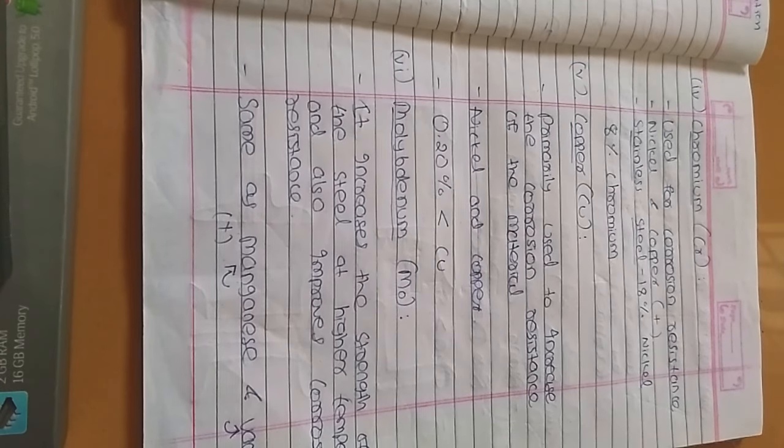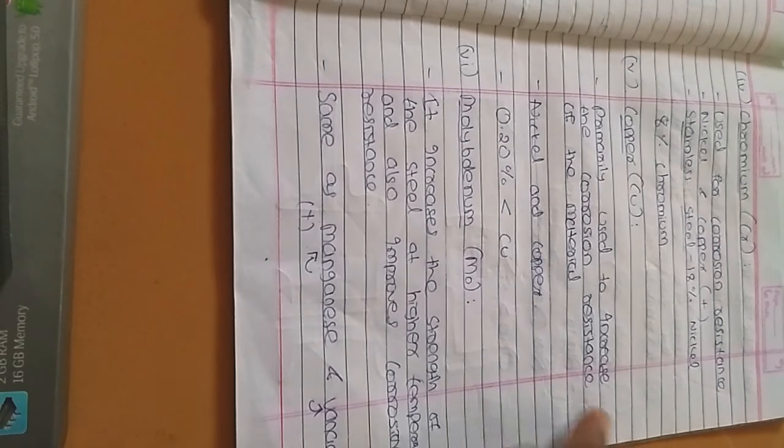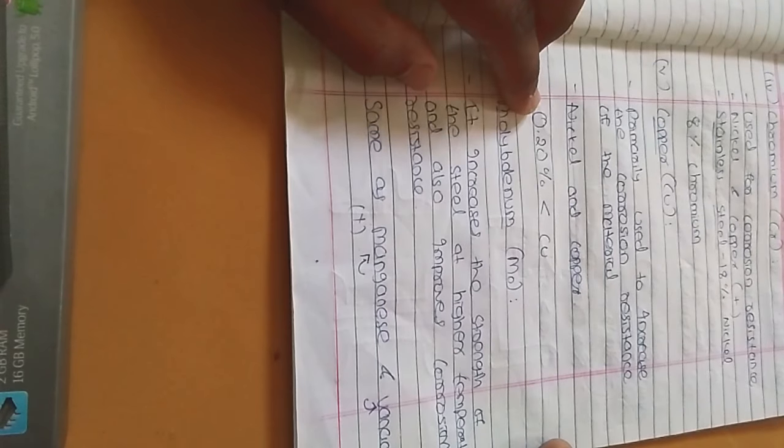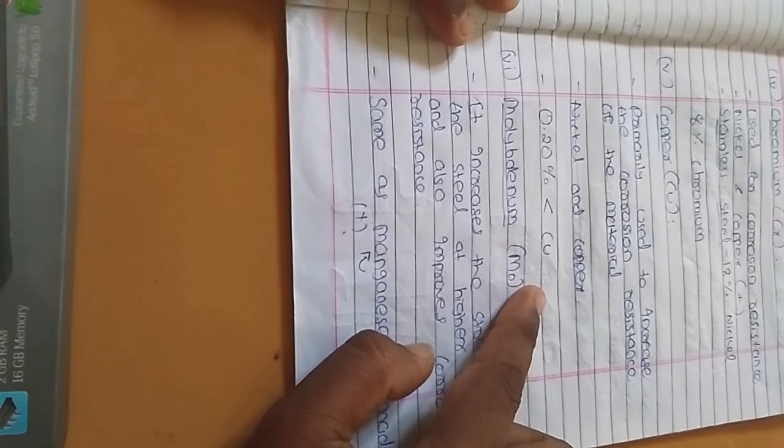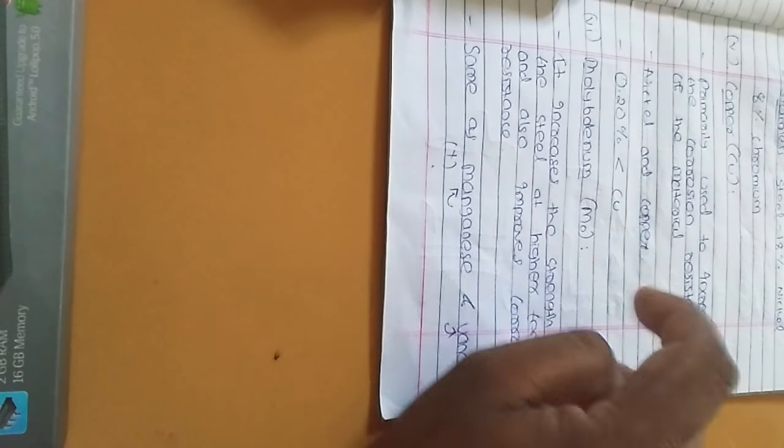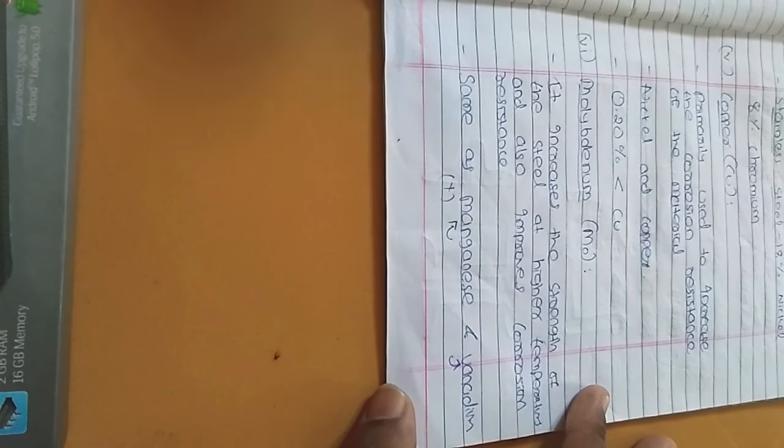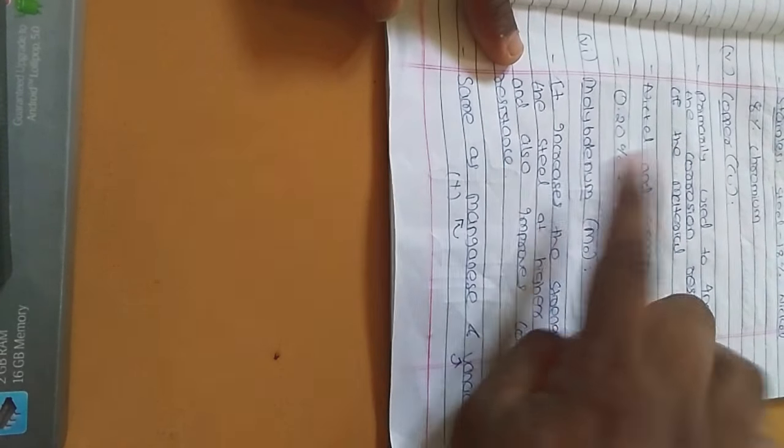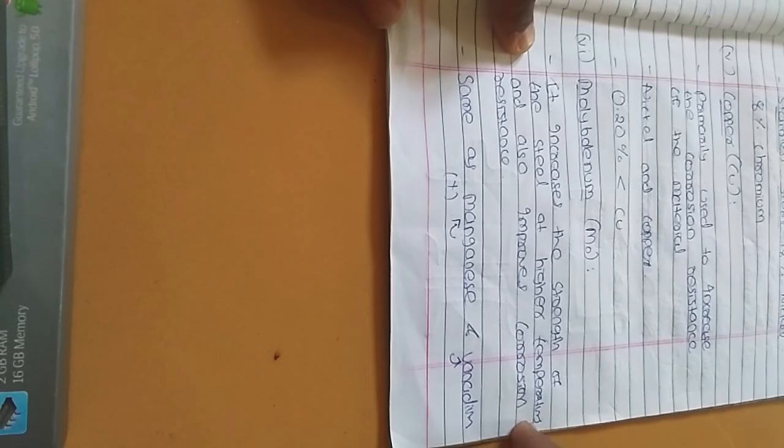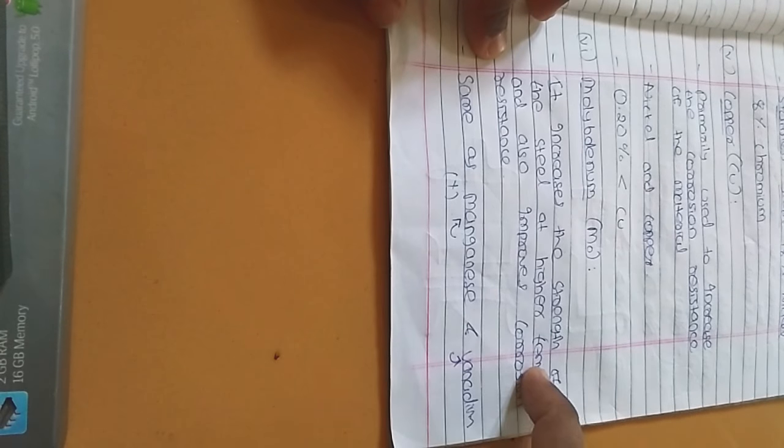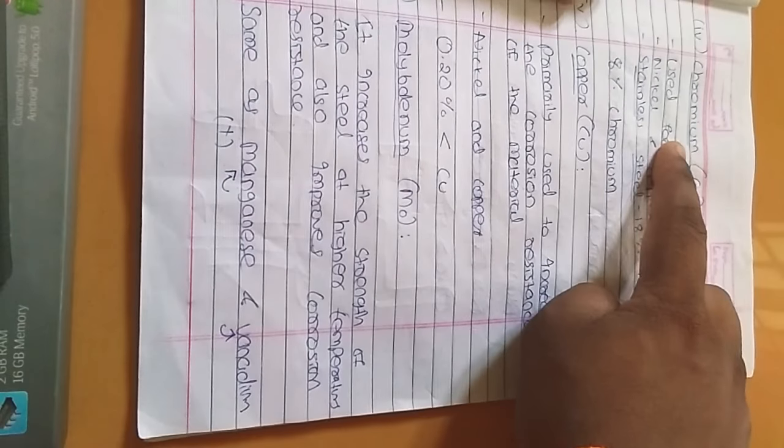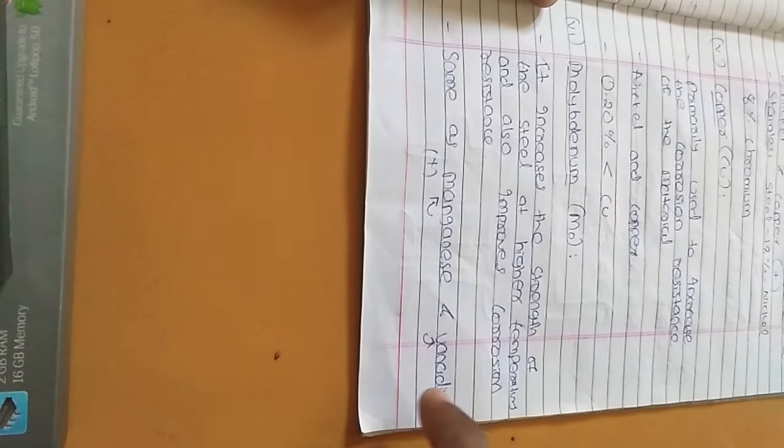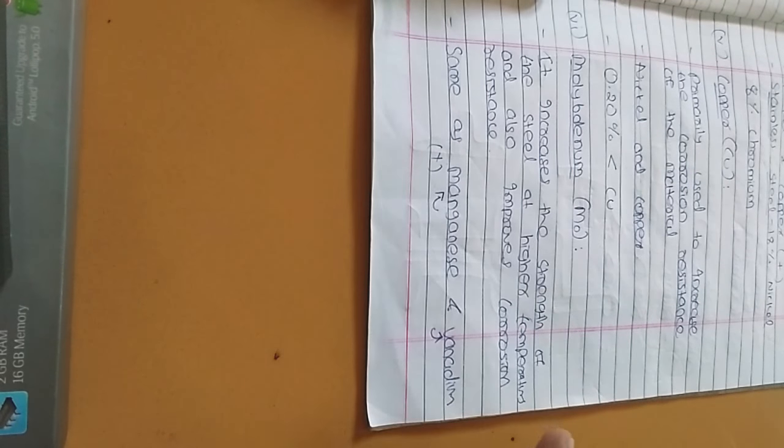Now copper content is primarily used to increase the corrosion resistance of the material. Same use. Its percentage is 0.2% or more. Molybdenum - these are the elements actually you don't know about, this is why I have made a video about what are the contents so you should know this. Molybdenum increases strength of the steel at higher temperature and also improves corrosion resistance.